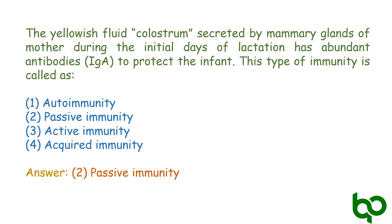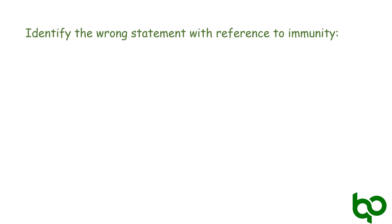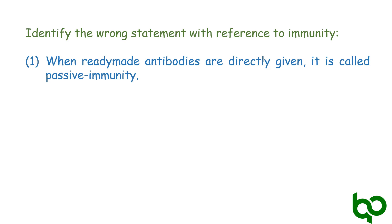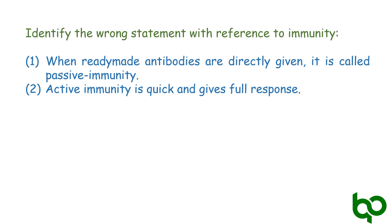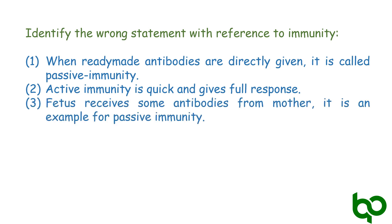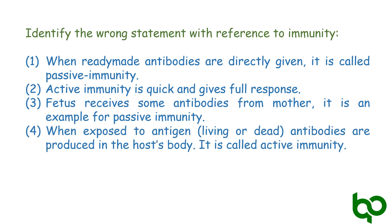Next question: identify the wrong statement with reference to immunity. First: when ready-made antibodies are directly given, it is called passive immunity. Second: active immunity is quick and gives full response. Third: fetus receives some antibodies from mother, which is an example of passive immunity. Fourth: when exposed to antigen — living or dead — antibodies are produced in the host's body, which is called active immunity.